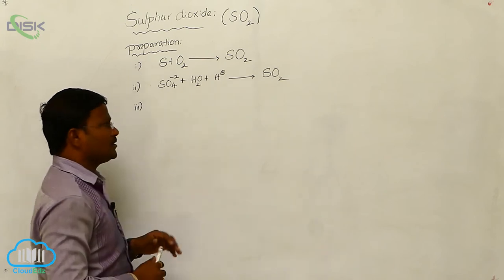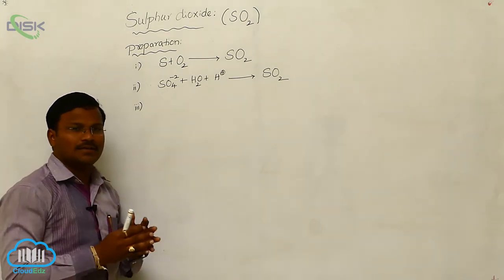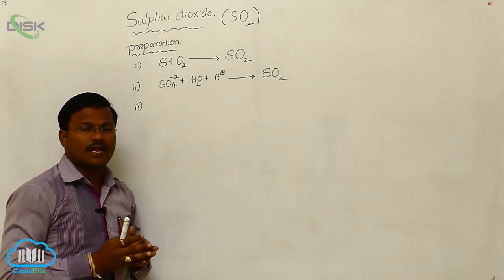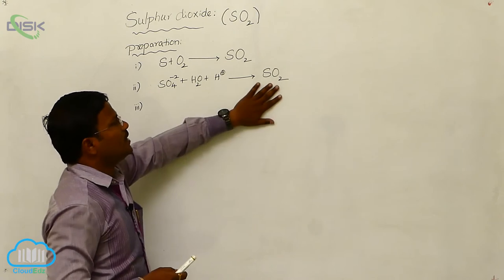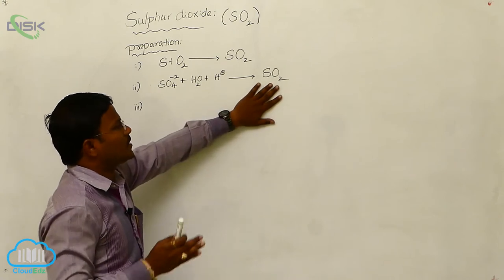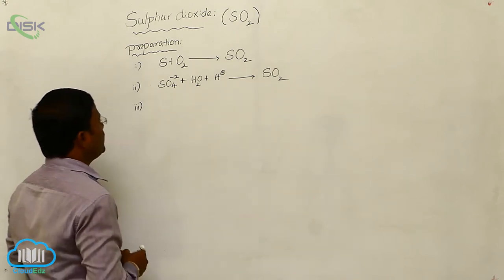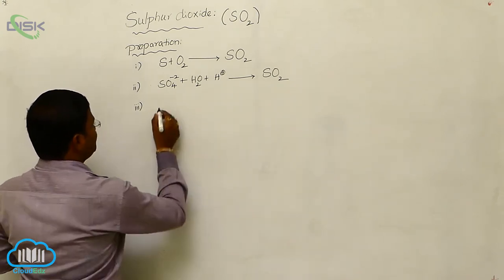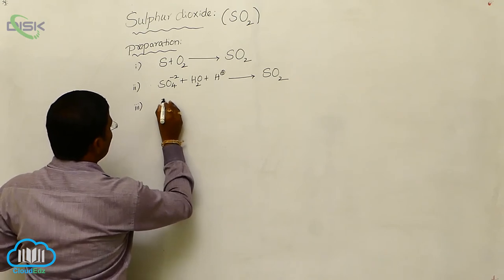In the second method, in the laboratory, it is convenient to produce sulfur dioxide from sulfate ions: SO₄²⁻ plus H₂O plus H⁺. That means, in the presence of dilute sulfuric acid, we can produce sulfur dioxide. The sulfates, when reacted in the presence of dilute sulfuric acid, convert into sulfur dioxide.